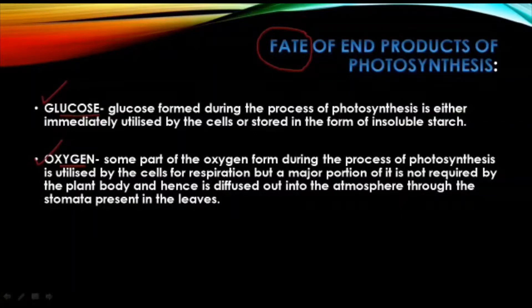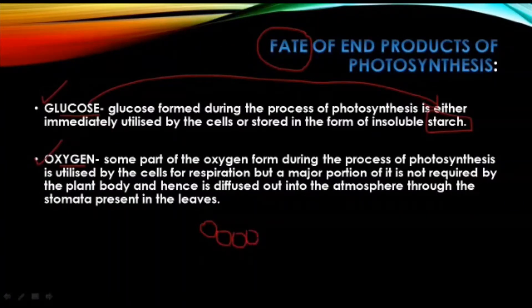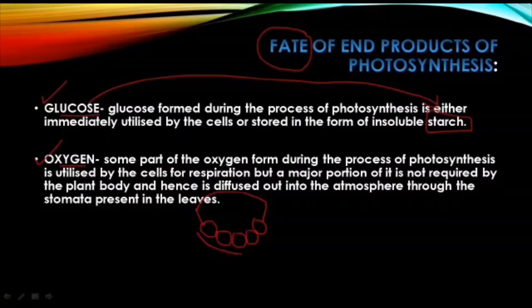Glucose formed during photosynthesis is either immediately utilized by the cells of the plant body, or is stored in the form of insoluble starch. Starch is the higher form of glucose. I am showing you a diagram — imagine one bead, then another bead, one more, and one more — they are all connected end to end to form a necklace.